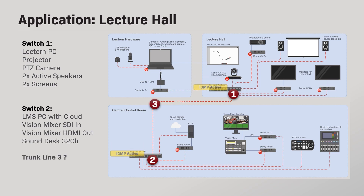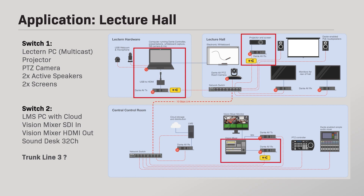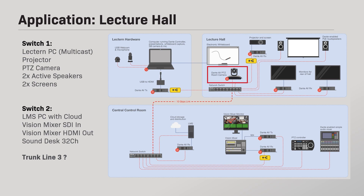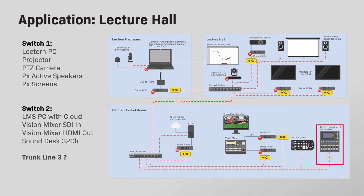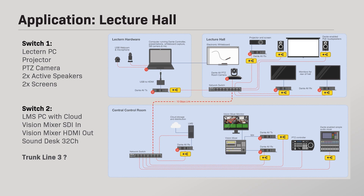With everything connected to local switches with IGMP active and only one IGMP querier, what signals can be sent via unicast, which ones must be sent via multicast, and how much bandwidth is required on the trunk line? The lectern PC must send its image to the local projector and a split to the vision mixer in the control room. The PTZ camera will only send its image to the vision mixer — that can be achieved with the default unicast. As both monitors will show the same content mixed by the vision mixer, we can use multicast to save bandwidth on our trunk lines coming from the control room. The LMS PC inside the control room will also subscribe to that same multicast. Audio from the sound desk can also be multicast to both active speakers, but as the channel count is very low, this will only consume a few megabits per second. This is how a system design should start — by identifying the methods of distribution to understand the signal flow and data consumption on each link of this topology.